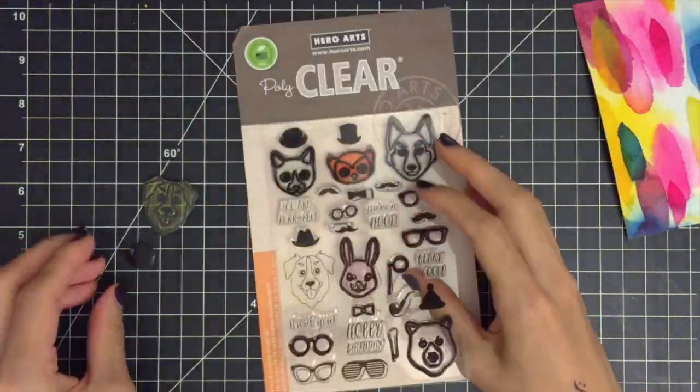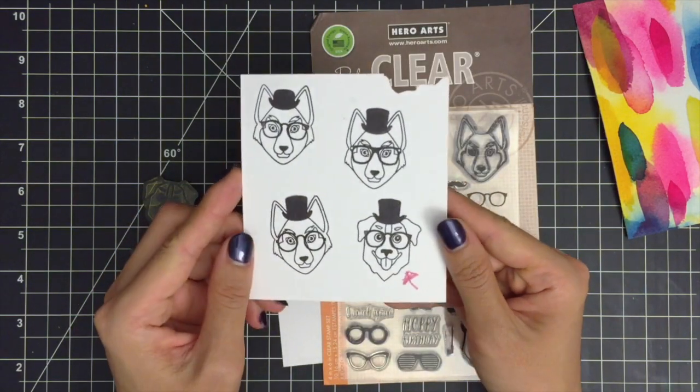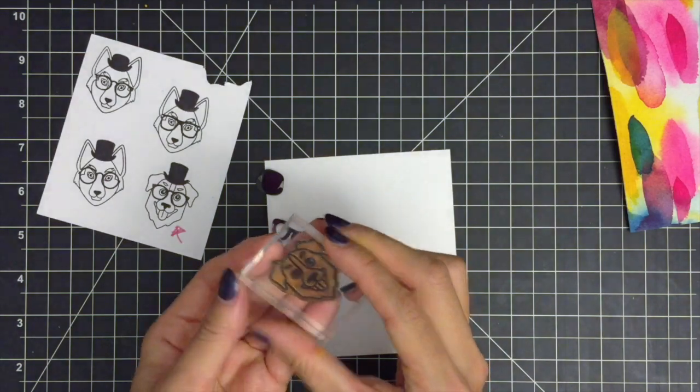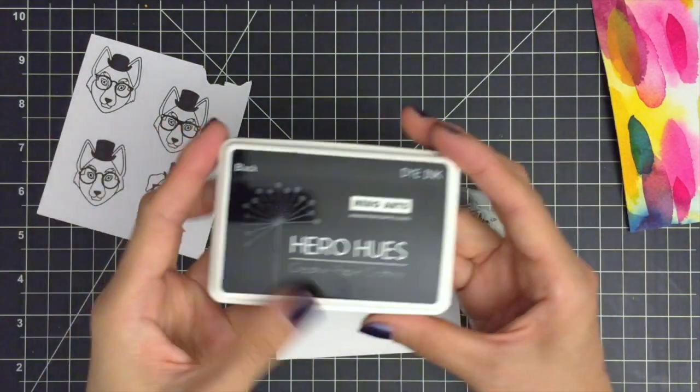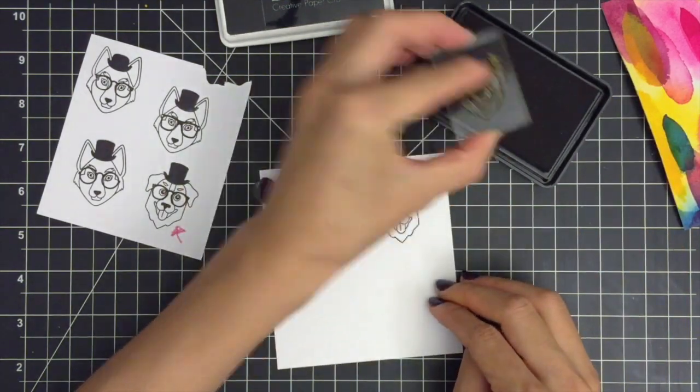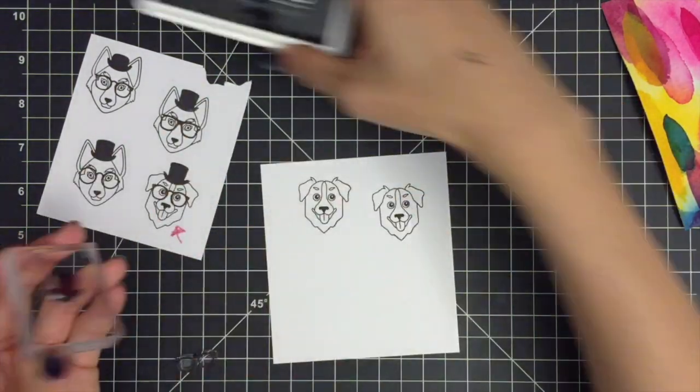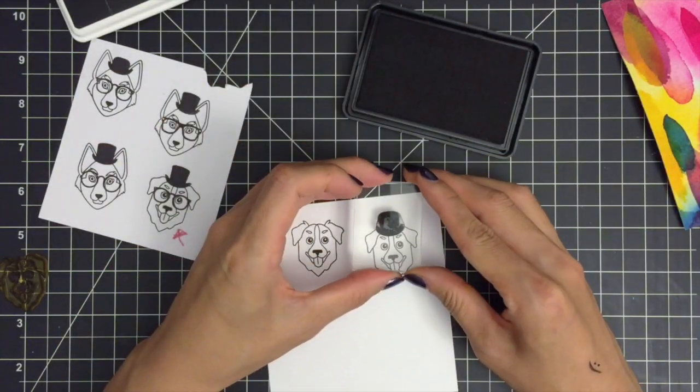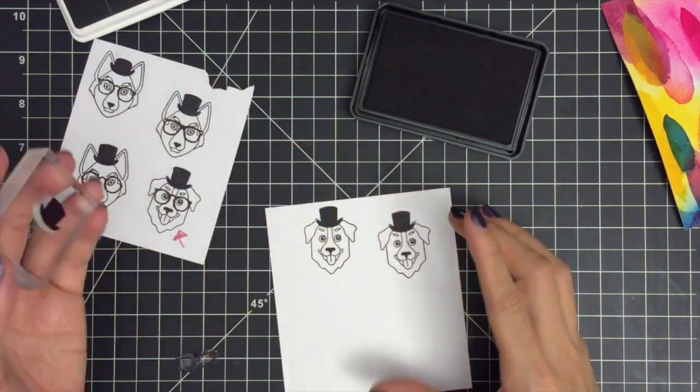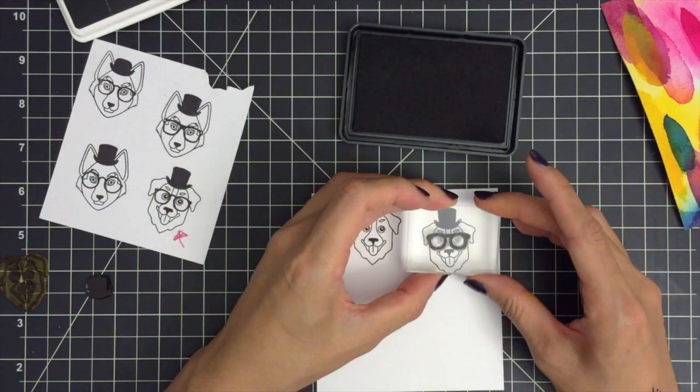It's now time to do some stamping. I already stamped a few images to figure out which works best for the focal point of my card. I'm gonna stamp the dog image on a piece of white cardstock using black ink. Then I'm adding a hat and glasses to dress up my dog. In case I make a mistake, I'm stamping two times for each image.